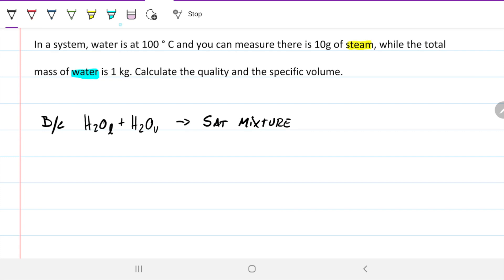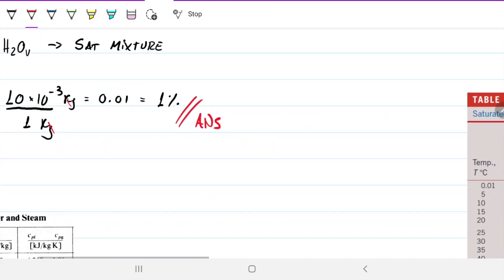To find out the quality, which is the first thing we're being asked, that's quite straightforward. Quality, if you use X, is just the mass of vapor divided by the mass total. And we happen to have these two things. The mass of vapor is 10 grams, which is 10 times 10^-3 kilograms, divided by 1 kilogram. So we get 0.01, or just the same thing as 1%. The quality of this mixture is 1%.